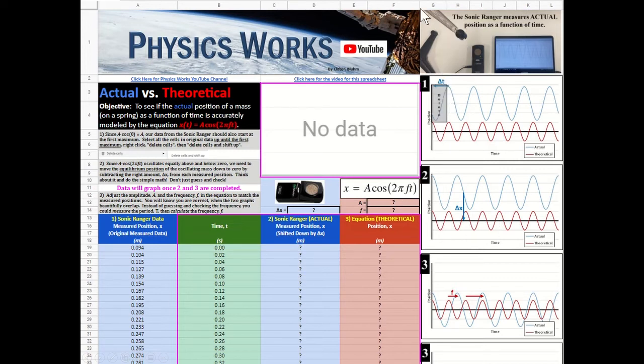And then because our mass was bobbing up and down some distance from the sonic ranger, we've got to move that data down so that it oscillates equally above and below the x-axis. To do that we just need to move the equilibrium position down to zero.